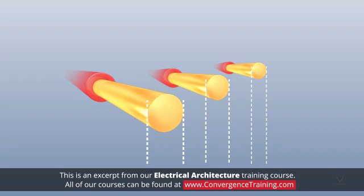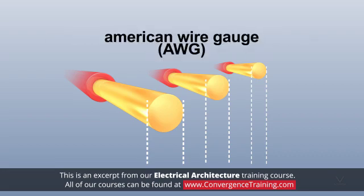In North America, wire size is measured and identified using the American Wire Gauge (AWG) system.